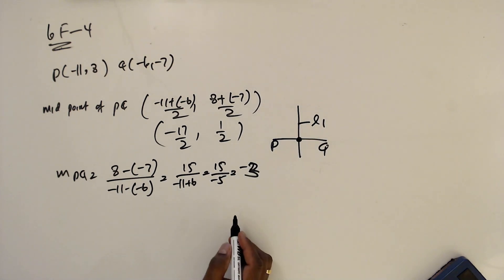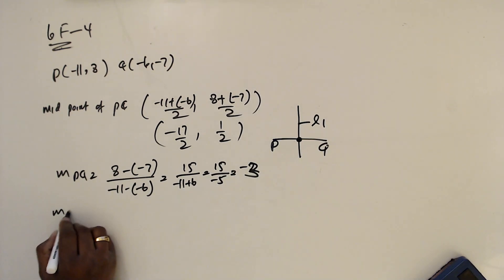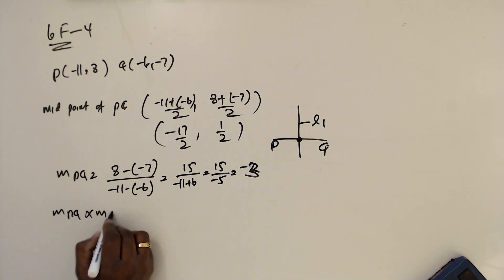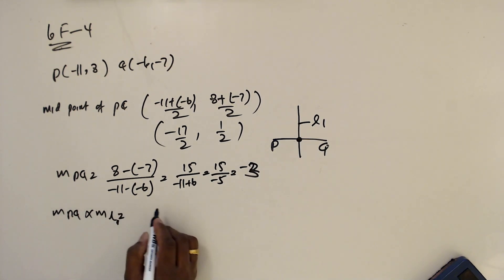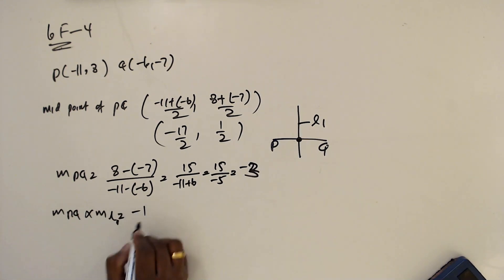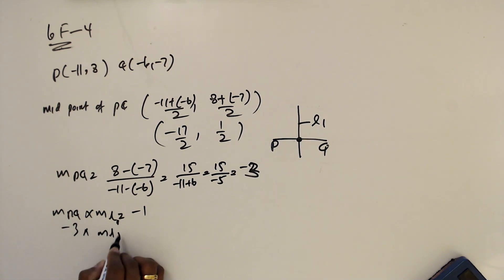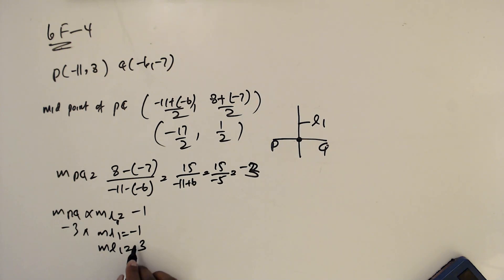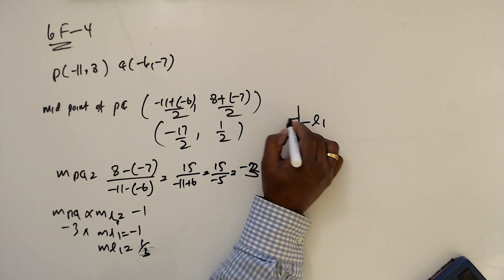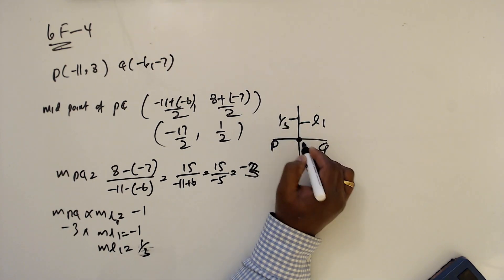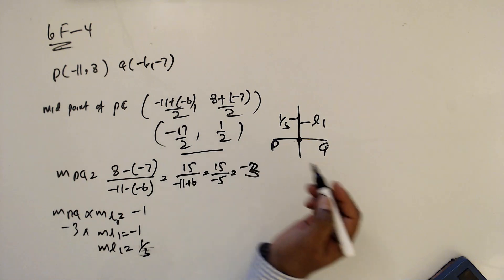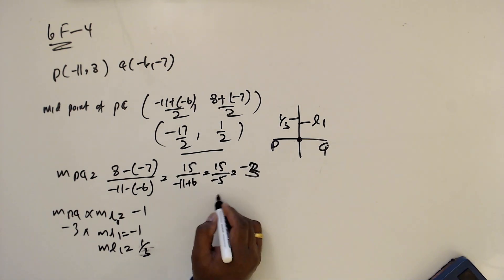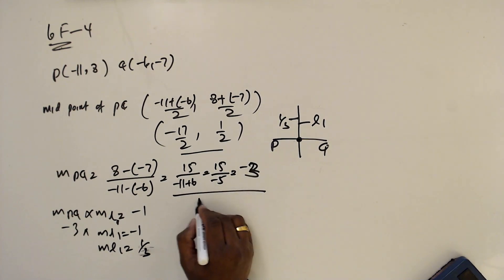This line is L1. So M_PQ times M_L1 equals minus 1. M_PQ is minus 3, so minus 3 times M_L1 equals minus 1, giving M_L1 equals 1 over 3. Now this gradient is 1 over 3, and the point is minus 17 over 2, one half.